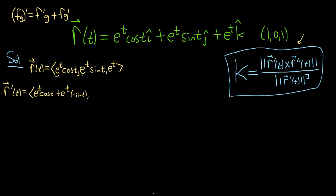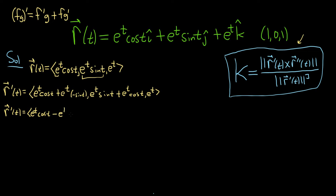Using the product rule again: the derivative of the first is e to the t, times the second, plus the first times the derivative of the second, which is cosine t. And then the derivative of e to the t is e to the t. So r prime of t equals e to the t cosine t minus e to the t sine t, then e to the t sine t plus e to the t cosine t, and e to the t.